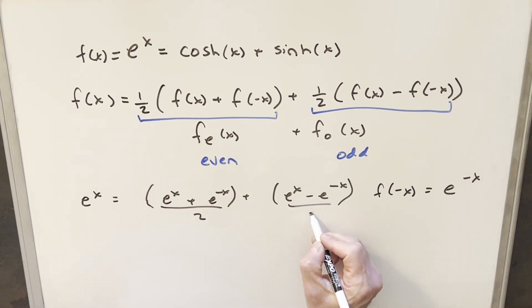This is actually the definition of cosh x and this is the definition of sinh x. Cosh is an even function and sinh is an odd function.